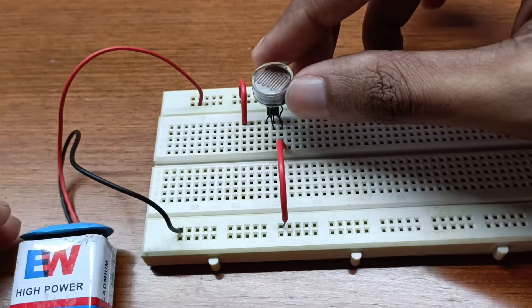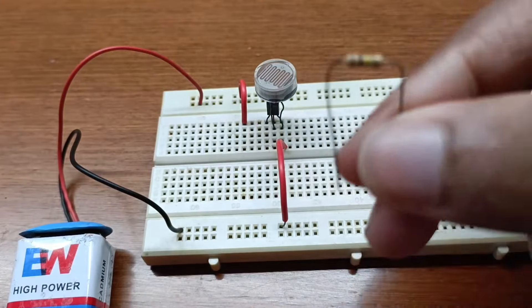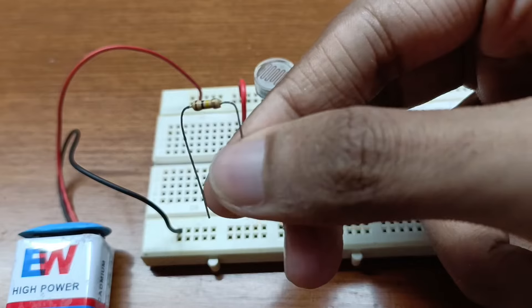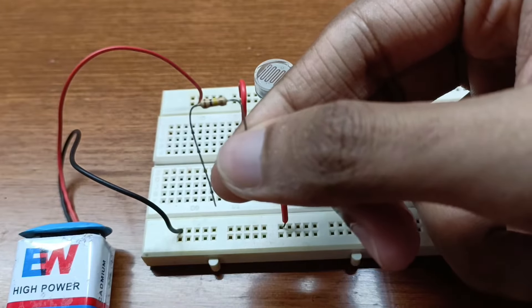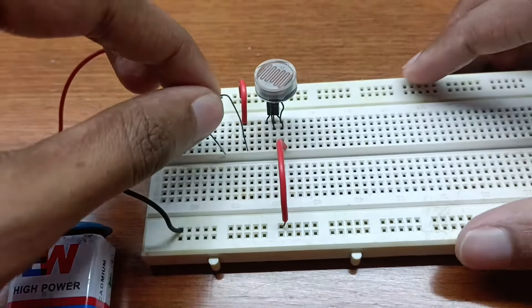This is a 100k ohm resistor. Connect this resistor from the positive side of the battery to the base of the BC 507 transistor.